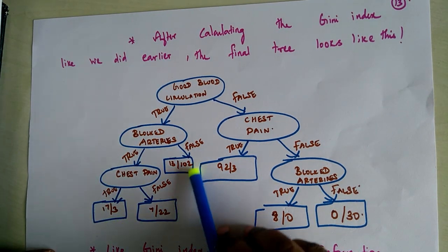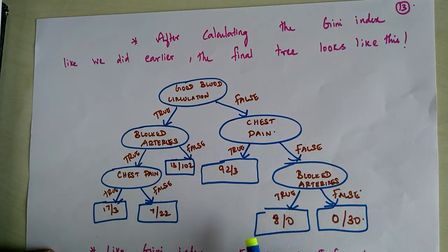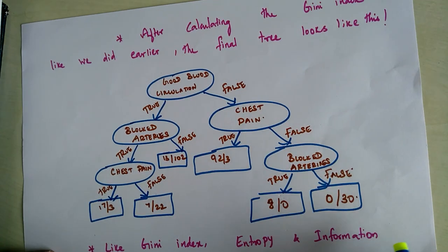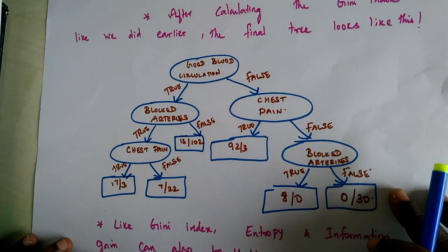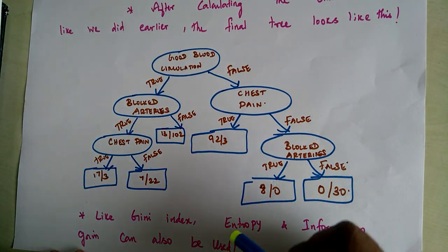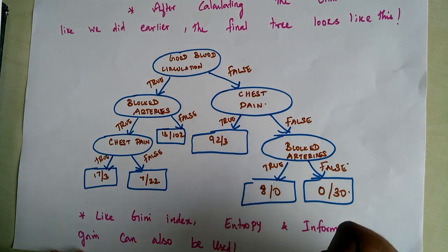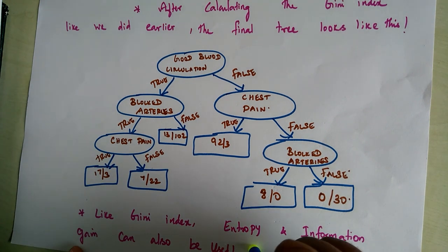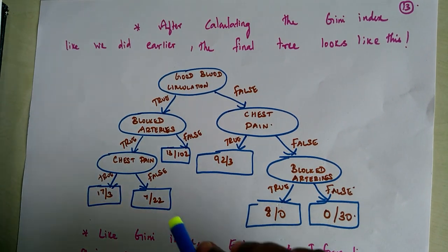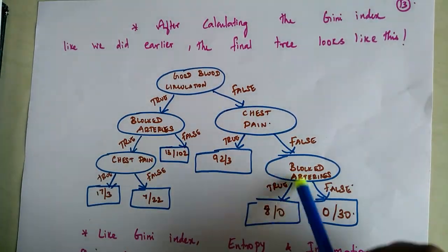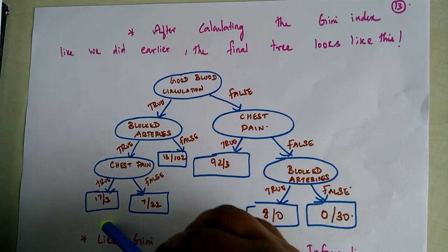The leaf nodes are still not entirely pure, but it is acceptable to predict the outcome. We can now travel down the tree to find the prediction of whether the patient has heart disease or not. In addition to the Gini index, we also have entropy and information gain as alternative metrics — entropy being a measure of confusion — which can also be used to arrange attribute priority.